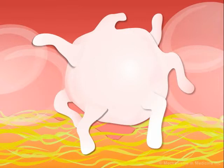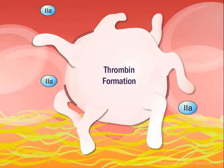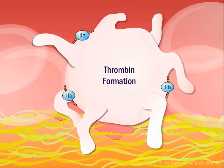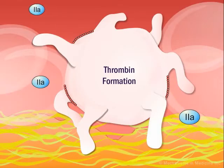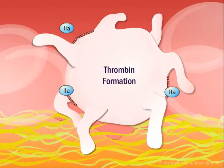The most potent platelet aggregating agent, thrombin, shown here as factor IIa, is formed via the coagulation pathway from prothrombin, or factor II, on the procoagulant surface of the activated platelet. Details are shown in figure 26-6.